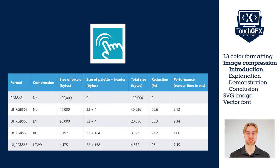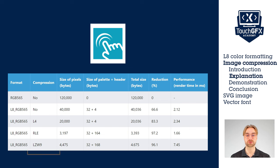The second flash-saving concept in Touch GFX is image compression. We'll see the different image compression algorithms and then how to use them inside Designer. Image compression can only be done on images using L8 formats. Touch GFX uses three compression algorithms: L4, LLE, and LZW.